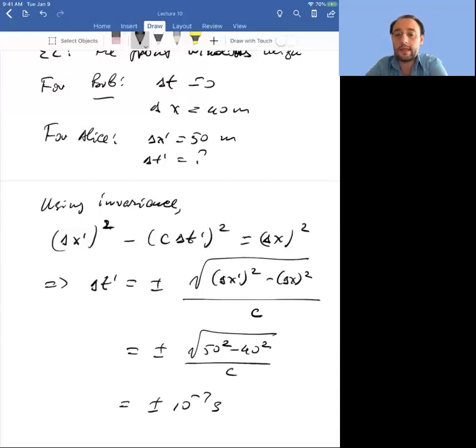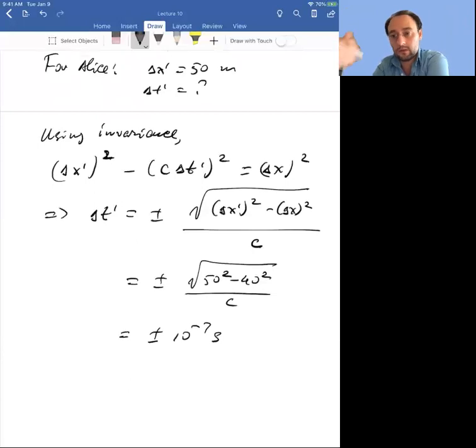That equals plus or minus square root of 50 squared minus 40 squared divided by c, which equals plus or minus 10 to the minus 7 seconds. We have to choose a sign. We choose a minus sign from the analysis of series of events in Alice's frame. From Alice's perspective, Bob is moving backwards, so if the windows align at t prime equals 0, then because this ship has shortened, the other windows align at negative time. You can use the invariance of the space-time interval to solve problems. It's a very powerful technique.